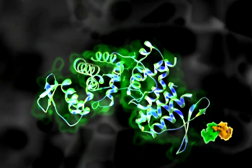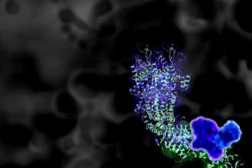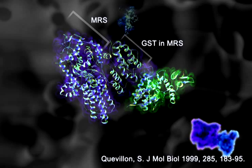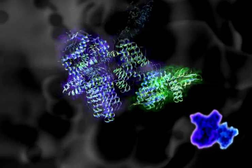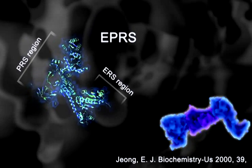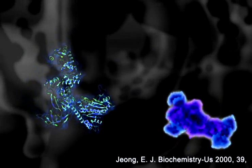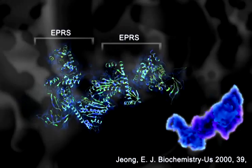It is assumed that AMP3 or P18's GST interacts with MRS and AMP2's GST region. EPRS has two bifunctional aminoacyl tRNA synthases, PRS and ERS.